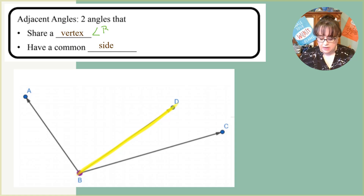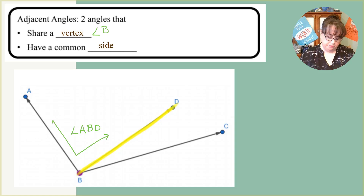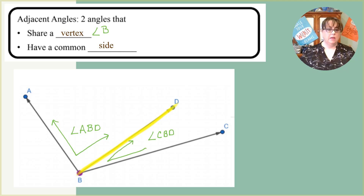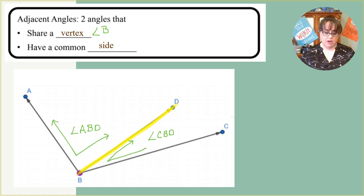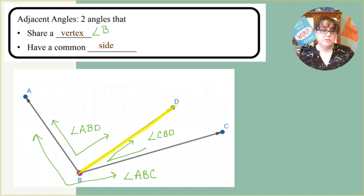We need a better naming convention than just angle B, so we name angles with both the ray and the vertex. This angle is called angle ABD — you come along ray A down to B and out to D. The other angle is called DBC or CBD — you come along C down to B and out to D. There are actually three angle B's here, including the larger angle ABC, so it's very important to use three letters when naming angles.